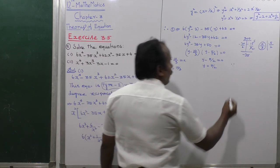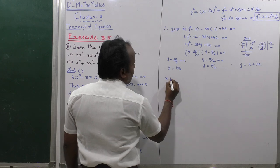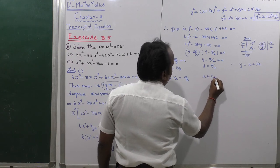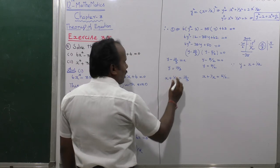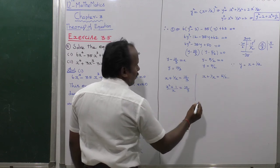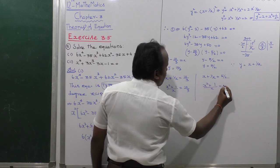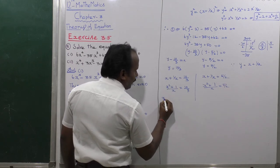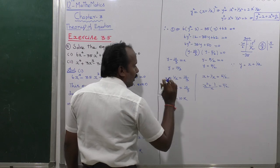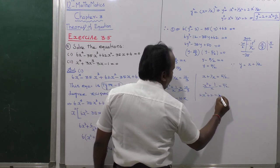Since y is replaced by x plus 1/x: First case — x plus 1/x equals 10/3. Multiplying through: (x² + 1)/x = 10/3, giving 3x² + 3 = 10x. Second case — x plus 1/x equals 5/2. Multiplying: (x² + 1)/x = 5/2, giving 2x² + 2 = 5x.